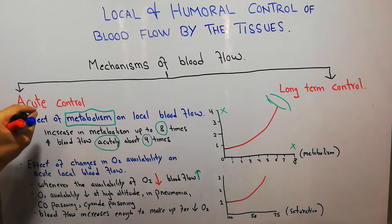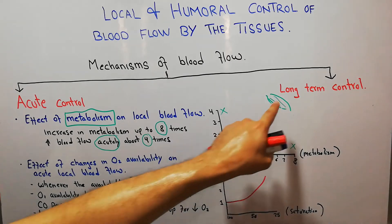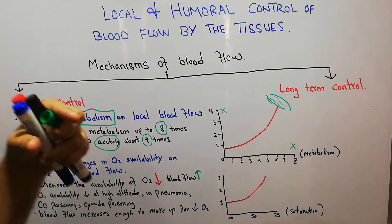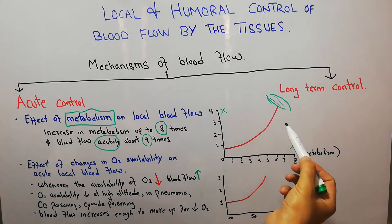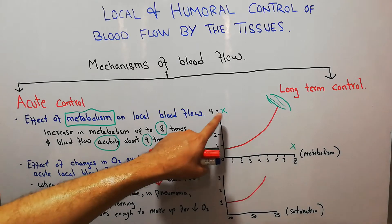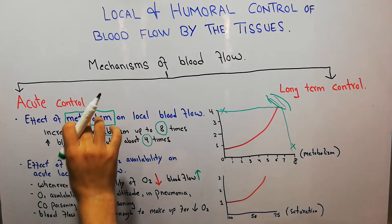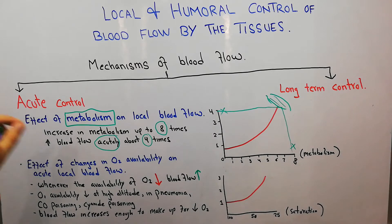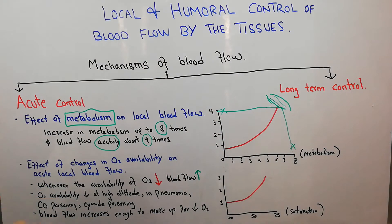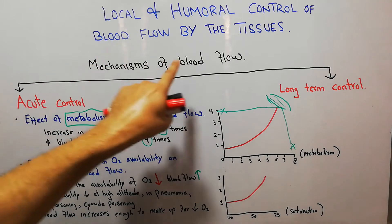This acute control is important because we are discussing how the tissue itself controls its own blood flow. Consider a muscle where someone has started exercising or lifting weights — the metabolism of the muscle has increased. When the metabolism has increased around eight times, the blood flow has increased around four times. That is the effect of metabolism — one way in which acute control occurs rapidly at the level of the tissue.